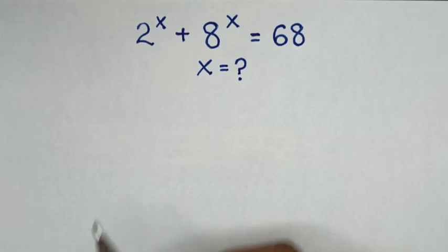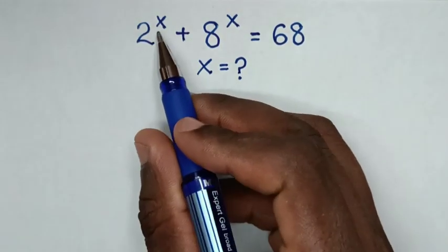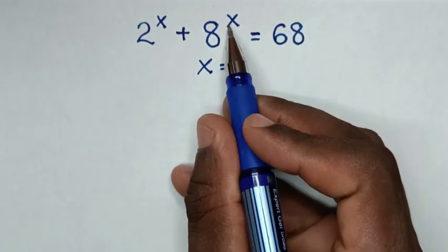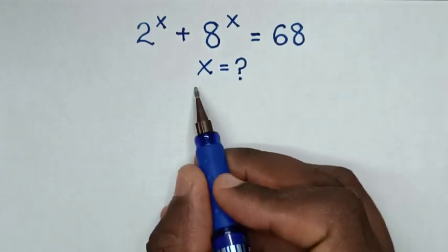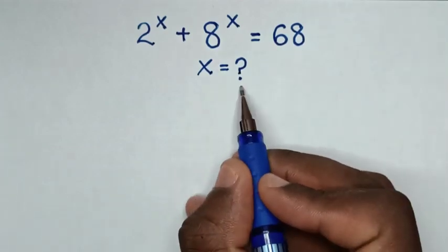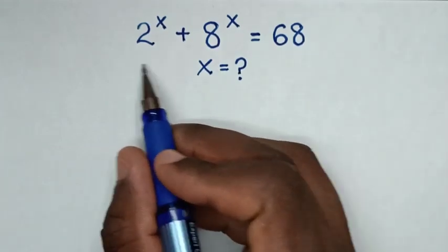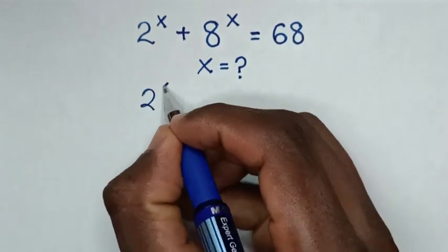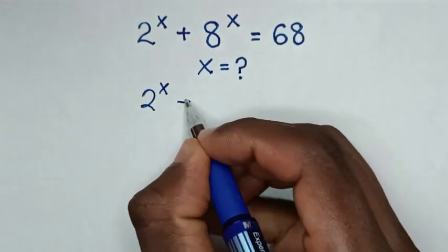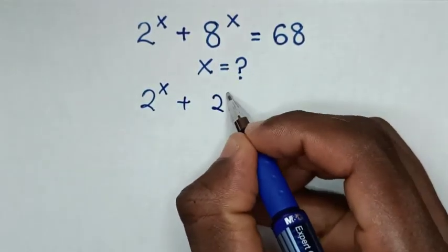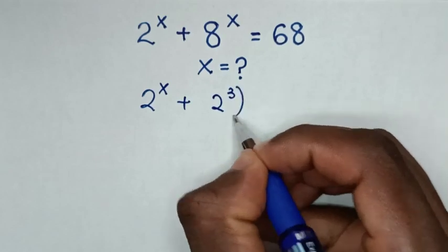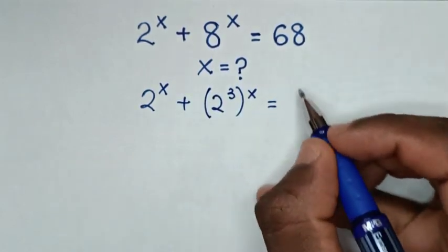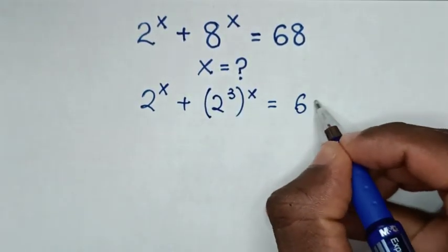Hello. How to solve 2 power x plus 8 power x is equal to 68, to find the value of x. So from this equation, 2 power x plus 8 — which is the same as 2 power 3 — bracket power x, is equal to 68.